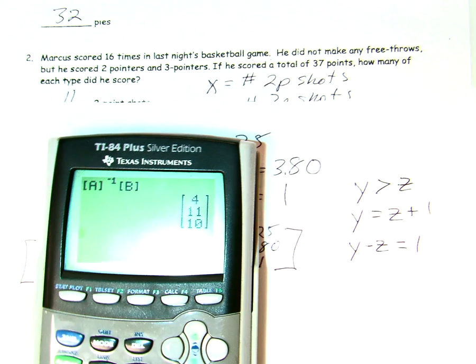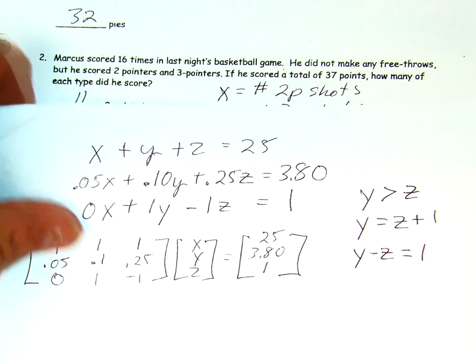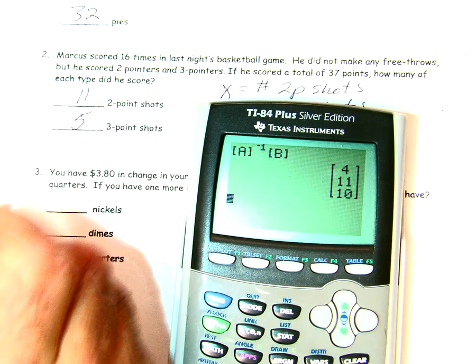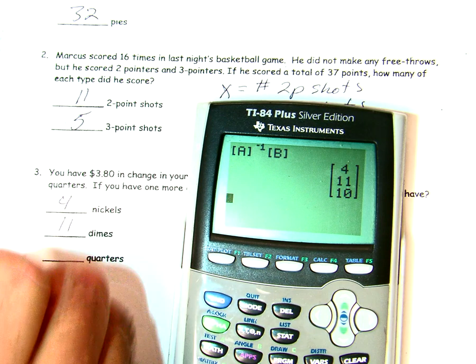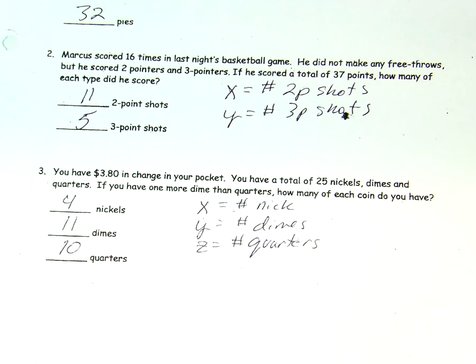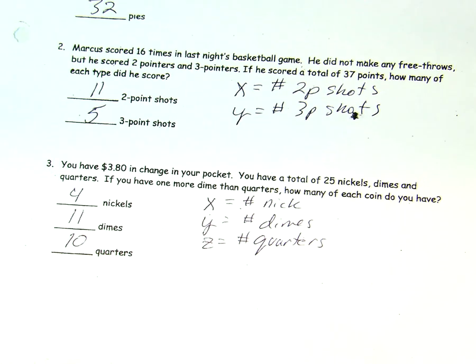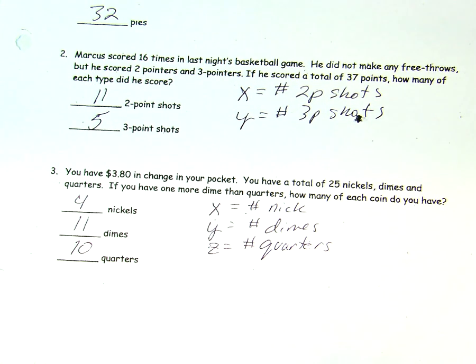So, we have 4 nickels, 11 dimes, 10 quarters. And you certainly want to double-check your work. Does 4 plus 11 plus 10 equal 25? Yes, it does. If you plug it into the amount equation, will you get $3.80? Yes, it does. And that's what you want to check to make sure that you have it right.